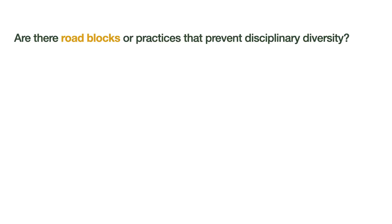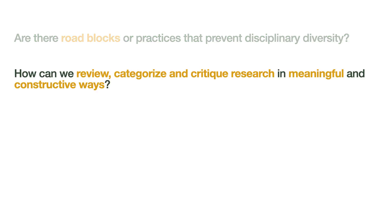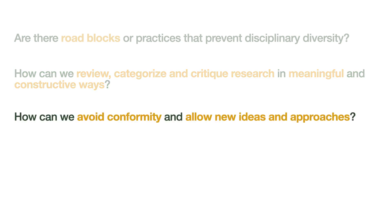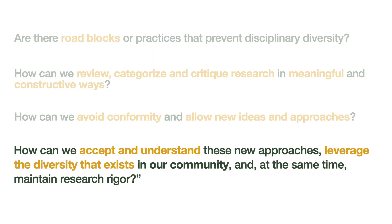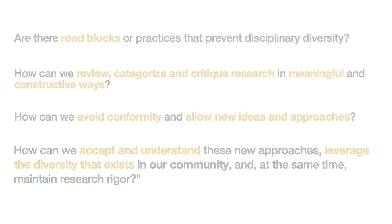So we asked: are there roadblocks or practices that prevent disciplinary diversity? How can we review, categorize, and critique research in meaningful and constructive ways? How can we avoid conformity and allow new ideas and approaches? How can we accept and understand these new approaches and leverage the diversity that exists, and at the same time maintain research rigor?